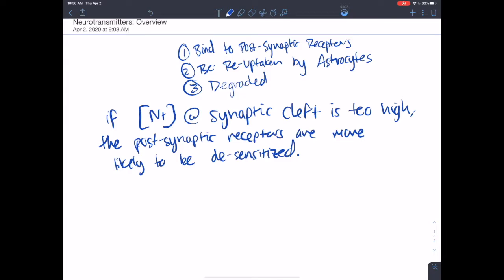So that's the reason we reuptake. That's the reason we degrade different neurotransmitters. Different neurotransmitters use different mechanisms for this, but the effect or the overall result is the same.